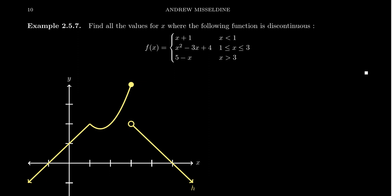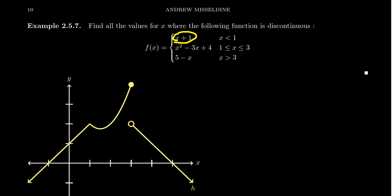This function right here is a piecewise function. Notice what the pieces look like — we have a polynomial, a polynomial, and a polynomial. This piecewise function was built together using polynomials, which, as we've learned previously, are continuous functions. So this is what we often call a piecewise continuous function.